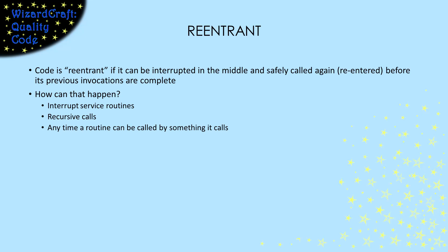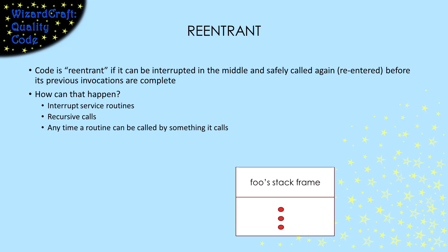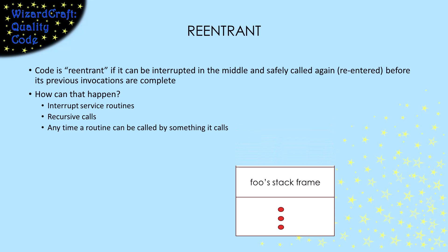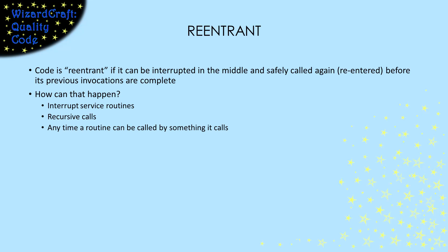Re-entrant means that foo gets called, then something happens to make foo get interrupted — maybe it's really an interrupt, or it's an intentional recursive call, or foo just makes some other call. Then, whatever interrupted foo makes another call on foo, so foo has two stack frames in the same call stack. Eventually, everything above the first foo exits, and then that call gets to finish running. If all of that can happen and foo always behaves the way we expect it to, then foo is re-entrant.